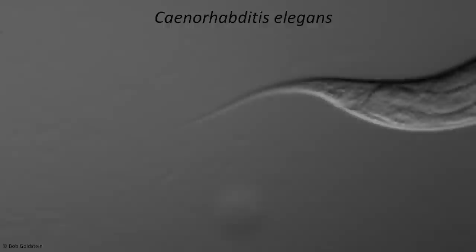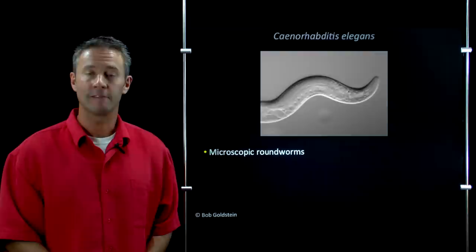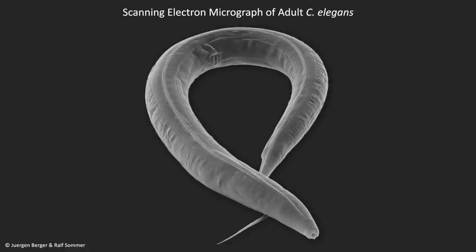C. elegans are microscopic roundworms. This one in the video clip appears a little bit flat, but they're actually round, and you can see that in this really beautiful scanning electron micrograph. To give you an idea of scale, an adult animal is about a millimeter in length, but they're only about 50 microns, or 1/20th of a millimeter wide. So depending on how good your eyesight is, that's just barely visible to the naked eye.